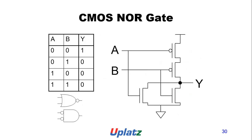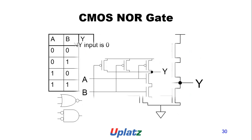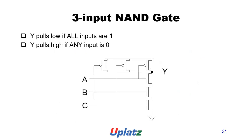A 3-input NAND gate: Y pulls low if all inputs are 1; Y pulls high if any input is 0.